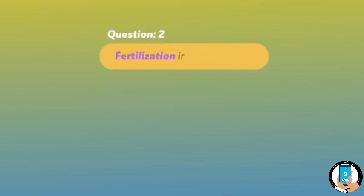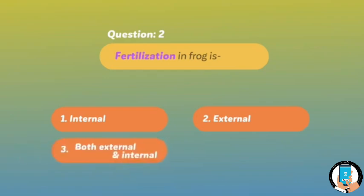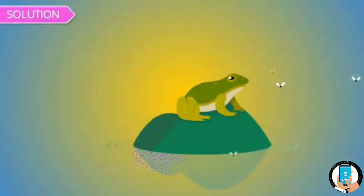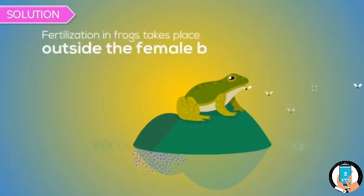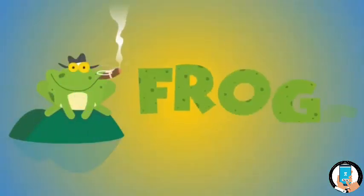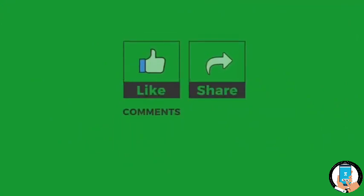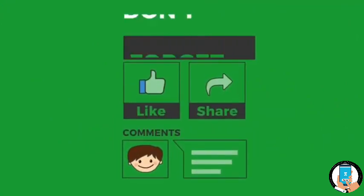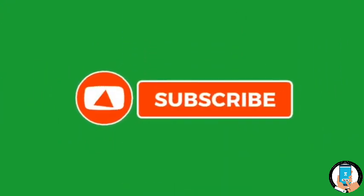Question two: fertilization in frog is — (1) internal, (2) external, (3) both external and internal, (4) absent. This question was asked in Kerala PMT 2012. Solution: fertilization in frogs takes place outside the female body, called external fertilization. Hence option two is correct. This concludes our video on frog. Please like, share, and comment on the video and don't forget to subscribe to our YouTube channel.